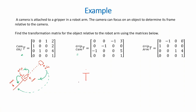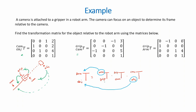We want to find the transformation matrix of the object relative to the arm. This is given by chaining: arm to gripper, gripper to camera, and camera to object. Looking at these three transformation matrices, the intermediate frames should match — gripper to gripper and camera to camera — so the frames cancel out correctly to give us the object relative to the arm.